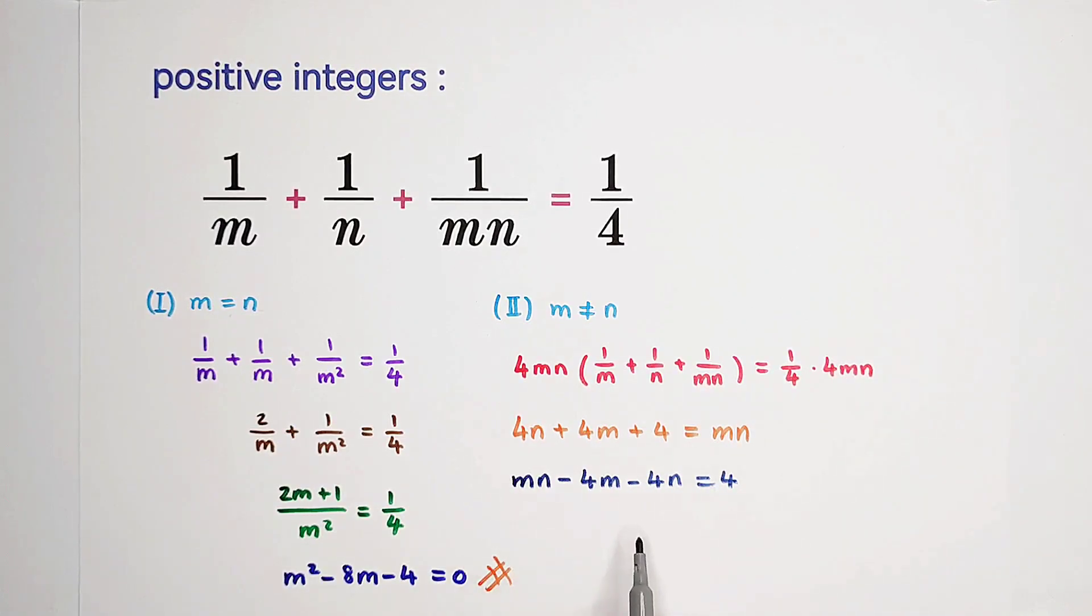On the left-hand side, we have a polynomial. On the right-hand side, we have a constant, a positive integer, 4. So now, our trick is to factorize the left-hand side, if possible. We have to try to do it.